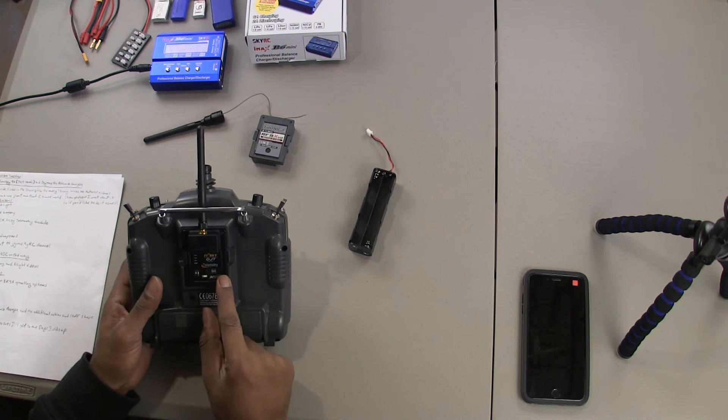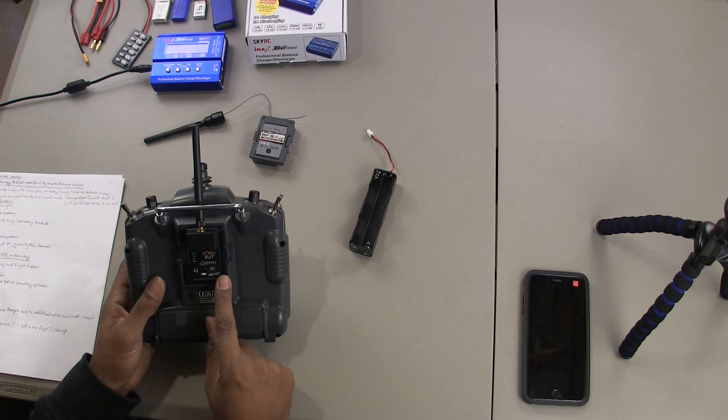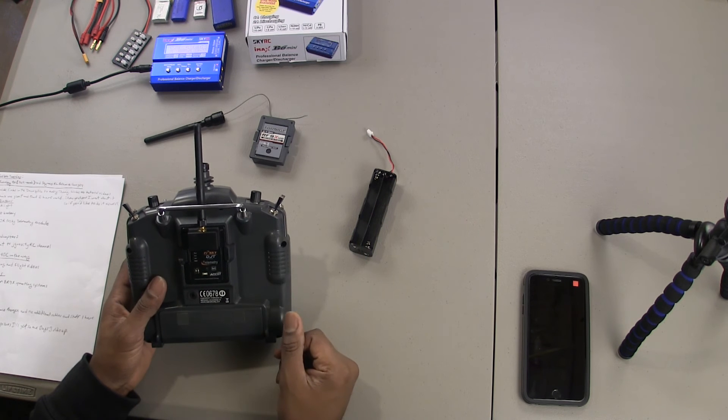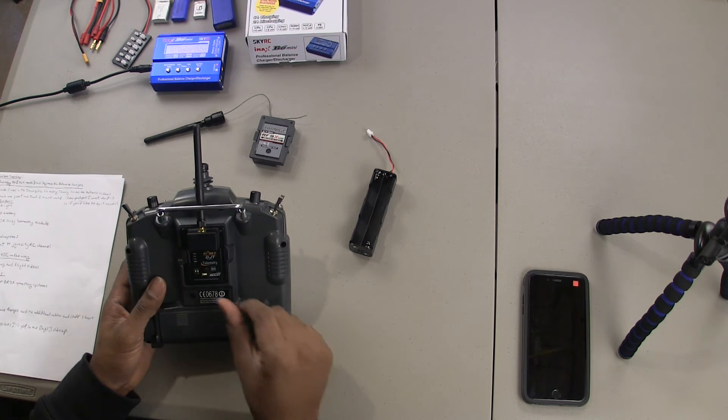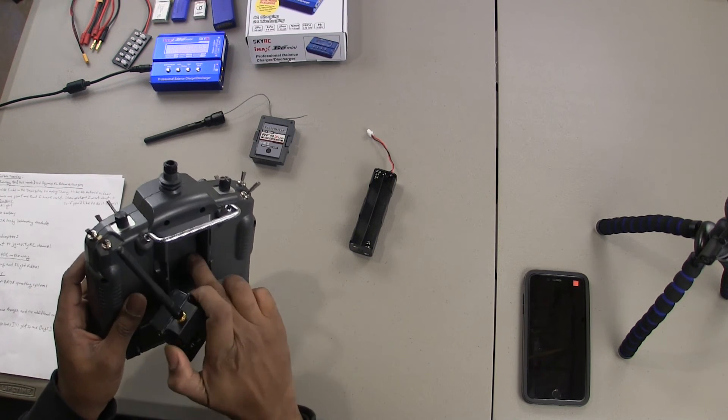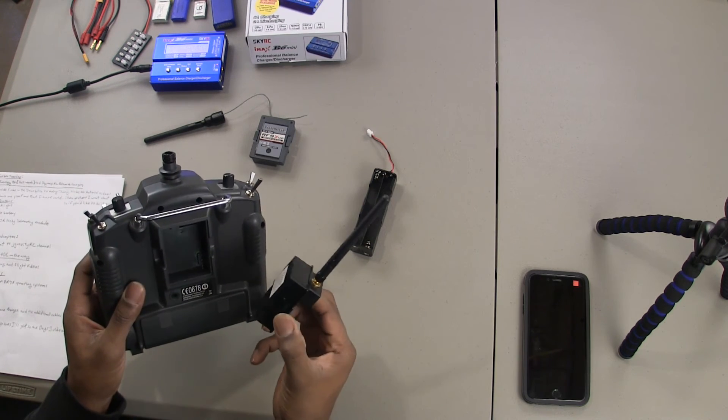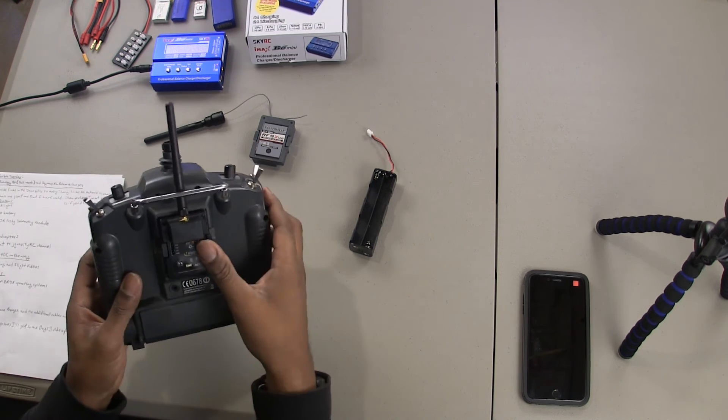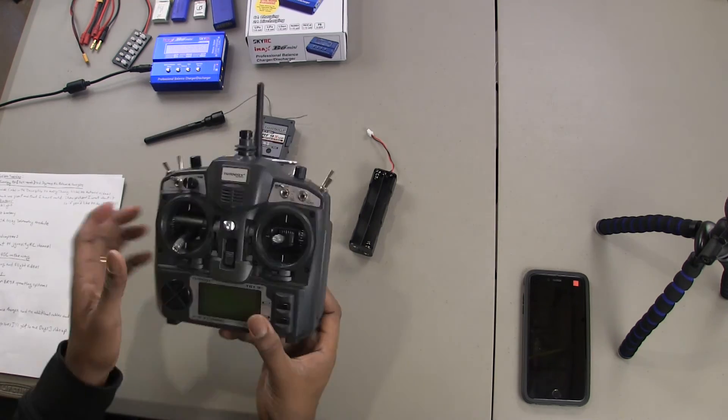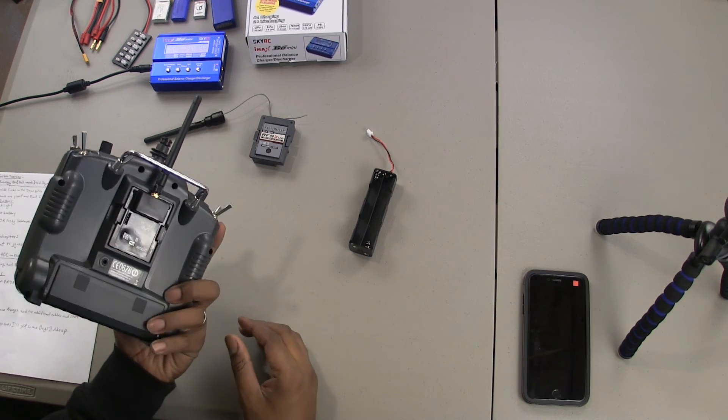But I took that off and I got an FrSky DJT telemetry module. Okay, so this will allow me to bind to FrSky receivers similar to the protocol that the Taranis is on. And this was super simple to do. There are a few things that you have to do to kind of make sure this thing will fit in here, but again, no soldering, very very simple to do. You just take your time, follow the steps and you're golden. Alright, so those are the modifications that I did.